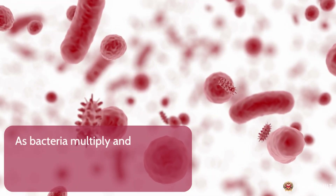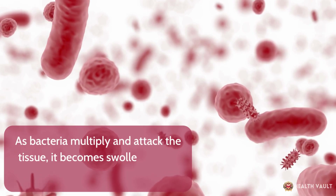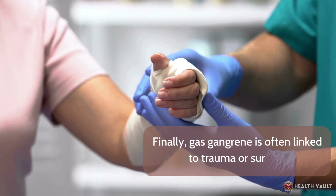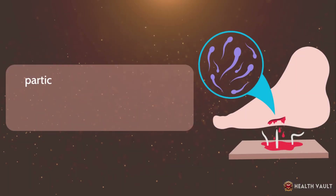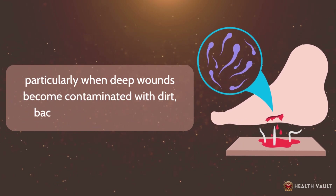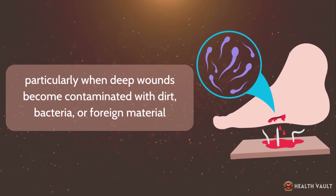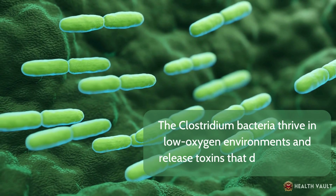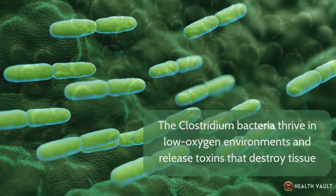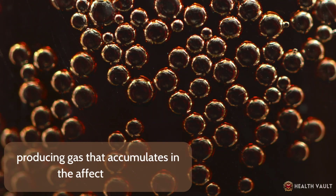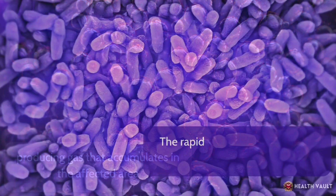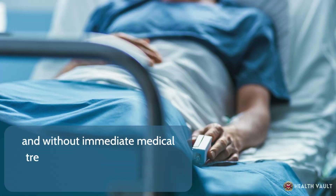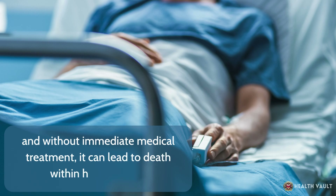As bacteria multiply and attack the tissue, it becomes swollen, moist, and discolored. Gas gangrene is often linked to trauma or surgery, particularly when deep wounds become contaminated with dirt, bacteria, or foreign material. The Clostridium bacteria thrive in low-oxygen environments and release toxins that destroy tissue, producing gas that accumulates in the affected area. The rapid spread of infection is a hallmark of gas gangrene, and without immediate medical treatment, it can lead to death within hours or days.